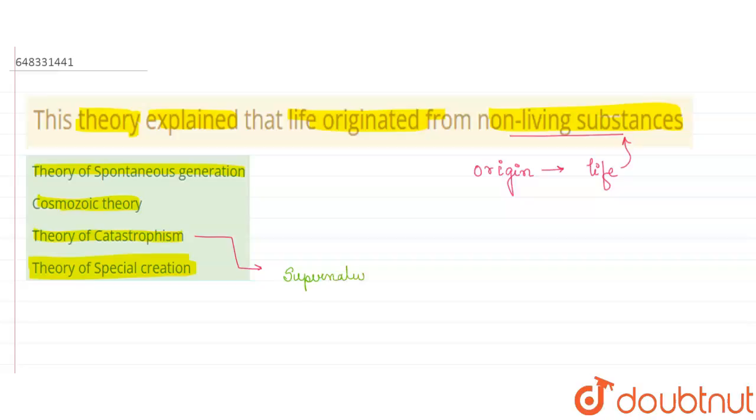By the supernatural powers, called the god creator. So it is believed in the divine creation of life - this believes in divine creation of life. This option is not at all correct. Even if we see the cosmozoic and the special creation theory, all these are wrong. But the spontaneous generation theory actually explains this part.